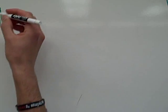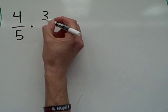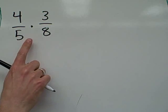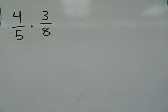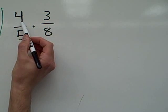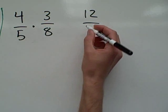We will start with this beautiful fraction: four-fifths times three-eighths. We are going to do the first step in this problem just like normal — just like normally multiplying a fraction. Cross-dividing or cross-cancelling is the process of simplifying the fraction before the multiplication. Our first step is to multiply straight across. Four times three is twelve. Five times eight is forty.